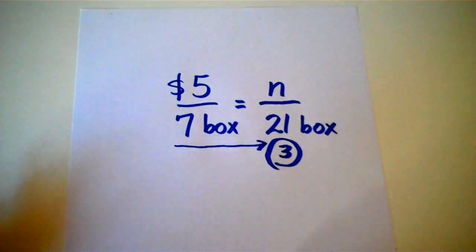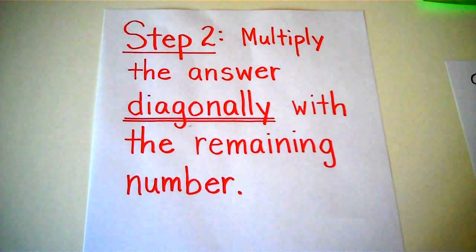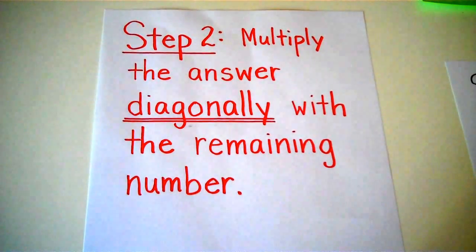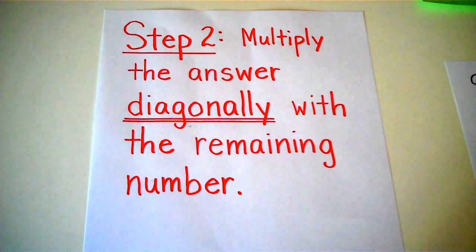Let's go to step 2. Step 2, multiply the answer that we had from dividing diagonally with the remaining number. Let's go back to the proportion and see how that works.